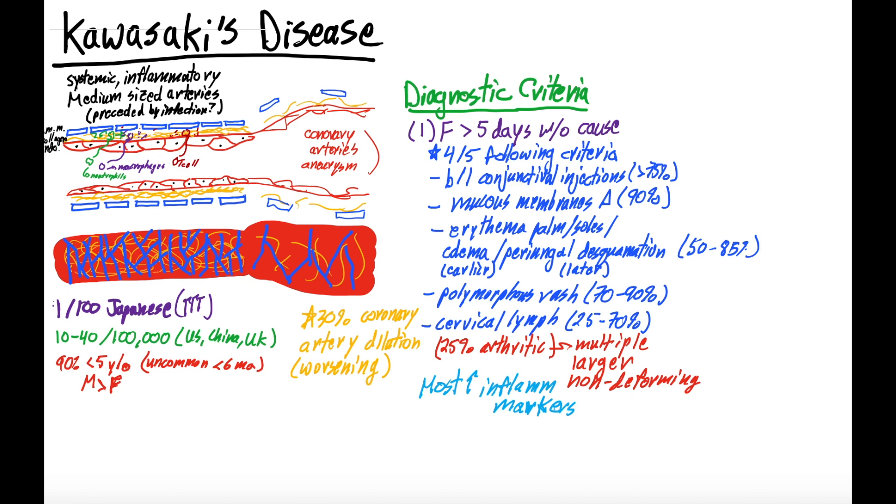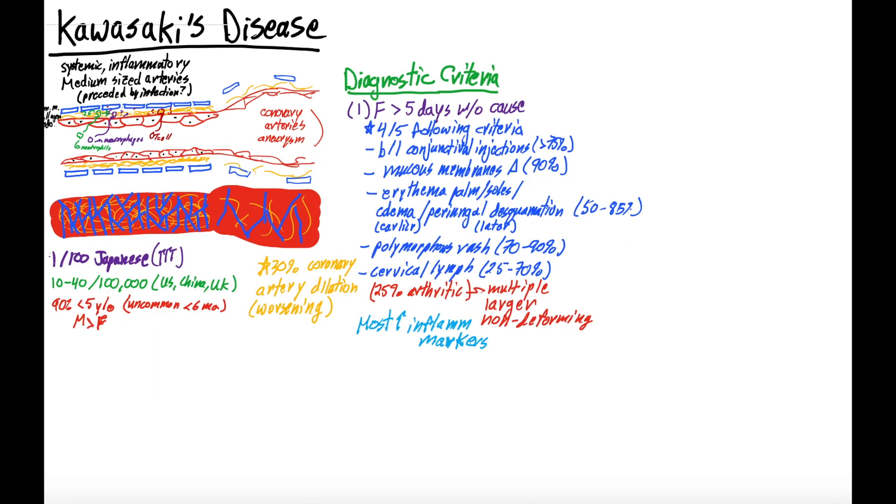So to treat Kawasaki's disease, there's a few different things to keep in mind. The kind of original first treatment was actually aspirin, abbreviated ASA. Aspirin was initially used because it's a general anti-inflammatory.